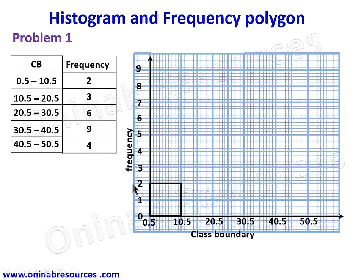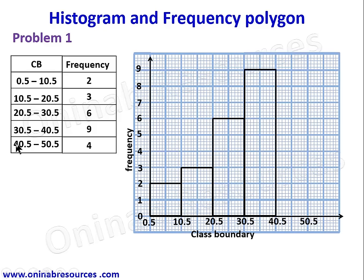The bars are drawn end to end. From 10.5 to 20.5 the frequency is 3, so the bar height is 3. From 20.5 to 30.5 the frequency is 6, so the bar height is 6. From 30.5 to 40.5 the frequency is 9, so the bar height is 9. Finally, from 40.5 to 50.5 the frequency is 4, giving a bar height of 4.